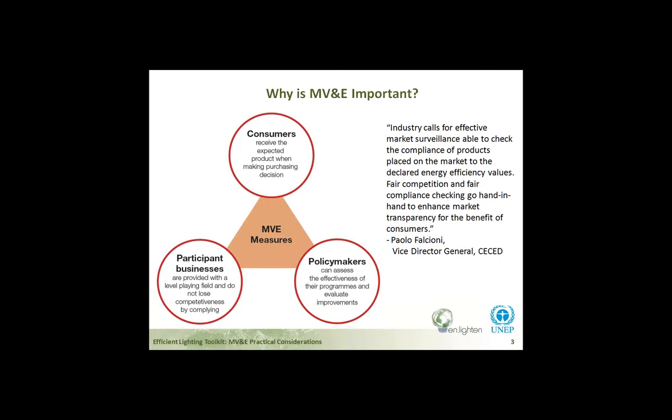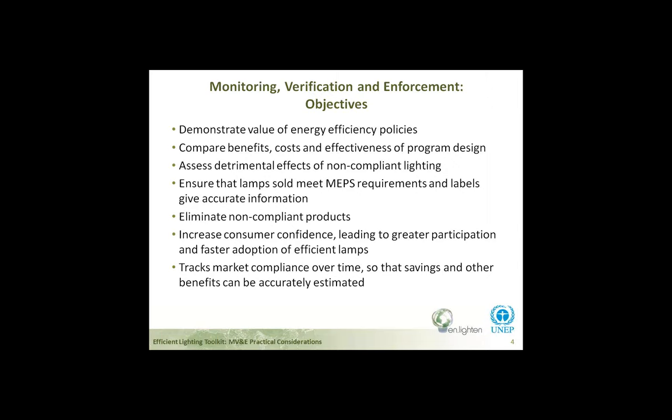Having established the importance and benefits of an MV&E program, let's look at some possible objectives. These include: helping ensure that energy efficiency policies are followed; enabling comparisons of cost, benefits, and effectiveness of programs; assessing the negative impacts of non-compliant lighting on the marketplace; ensuring compliance with MEPS and accuracy of labeling for consumers; serving as a tool to eliminate non-compliant products from the market; giving consumers confidence when purchasing products, which leads to greater participation and faster market adoption; and tracking the rate of compliance each year so that calculation of savings and other benefits can be more accurately estimated. Fundamentally, MV&E activities are continuous and complementary compliance efforts working towards fair competition in the market.